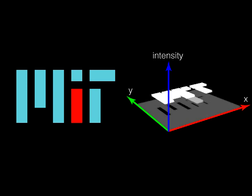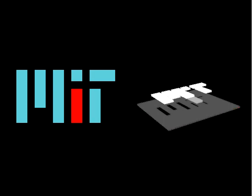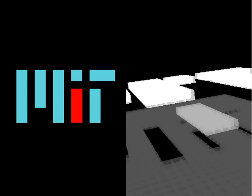We introduce a new data structure, the bilateral grid, which enables real-time edge-aware image processing. 2D images are lifted onto a coarse 3D grid where the Z component corresponds to intensity. As a result, points across a strong edge are distant in the grid. We introduce slicing, an operation that exploits this property to extract a discontinuous 2D image from a smooth bilateral grid.